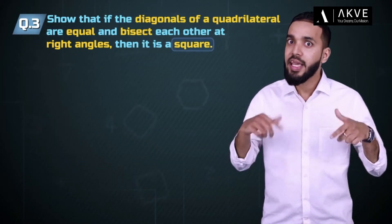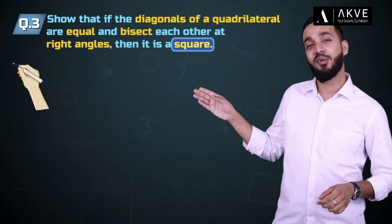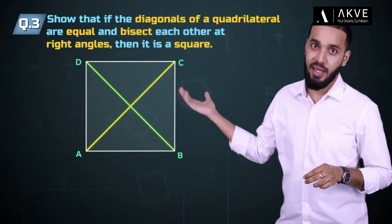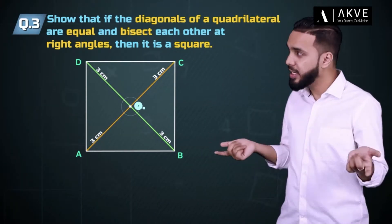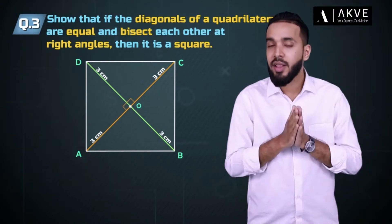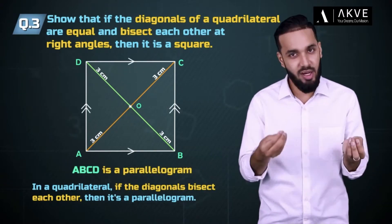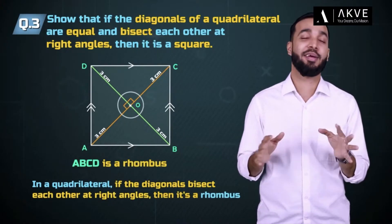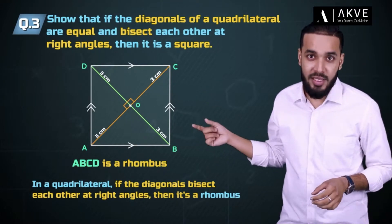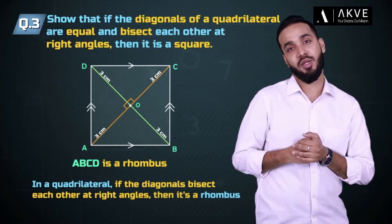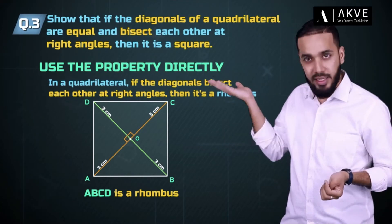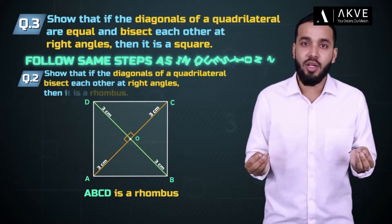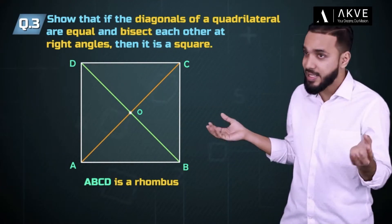Let's take a quadrilateral ABCD where diagonals AC and BD are equal and bisect each other perpendicularly at O. When the diagonals bisect each other the quadrilateral is a parallelogram, and when they bisect at right angles it is a rhombus. So ABCD is a rhombus by the property we proved in the previous question. You may use the property directly or follow the same steps — the end motive is to prove ABCD is a rhombus.